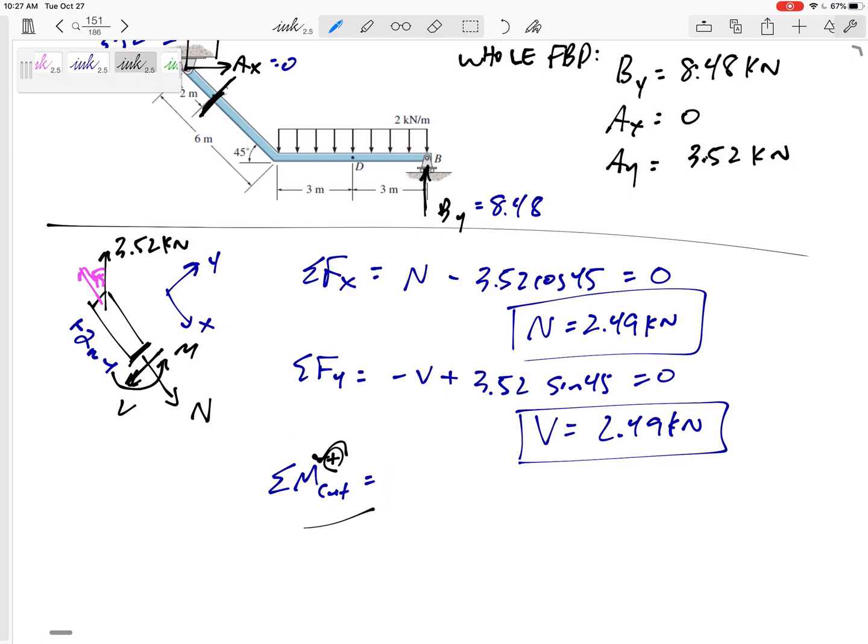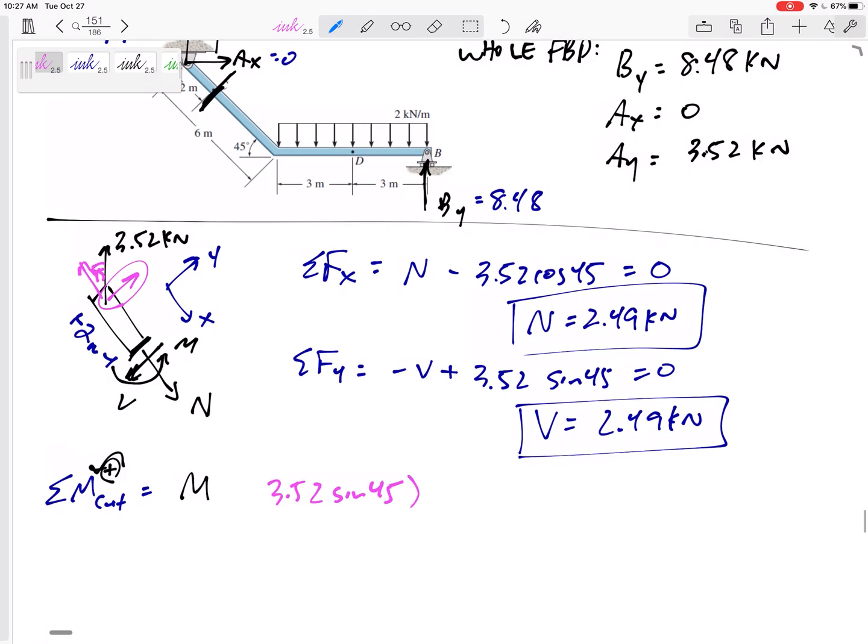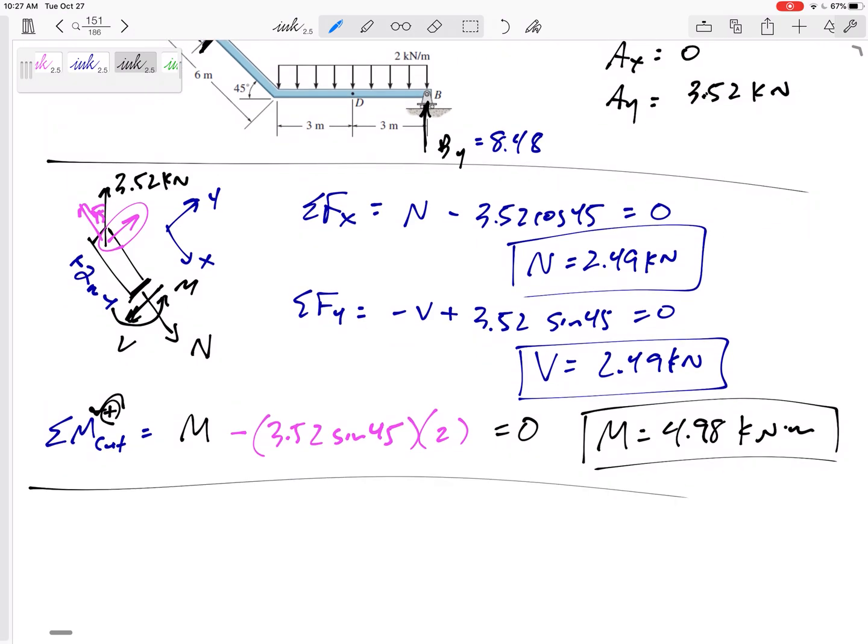Let me move this over here. Summing the moments about the cut. N goes straight through it. V goes straight through it. I do have the M, positive M. And then let's see, this component right there, 3.52 sine 45 is acting a perpendicular distance of two away, creating a negative moment. I'll set that equal to zero and I would get an M of positive 4.98 kilonewton meters. All the forces were in kilonewtons. All the dimensions were in meters. And so that is the answer for point C.